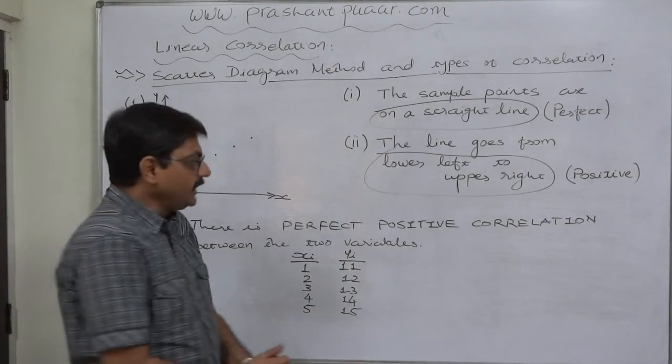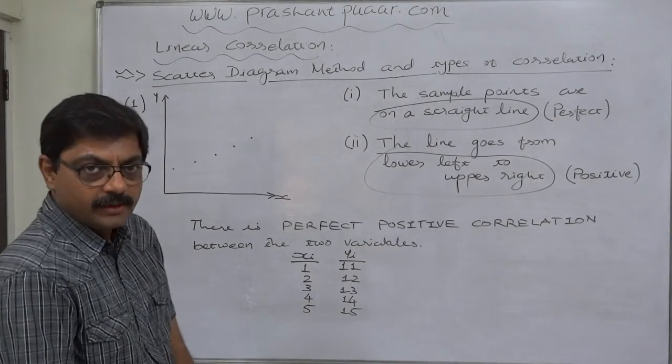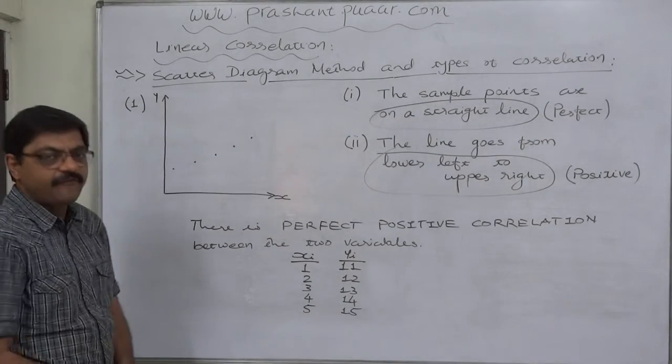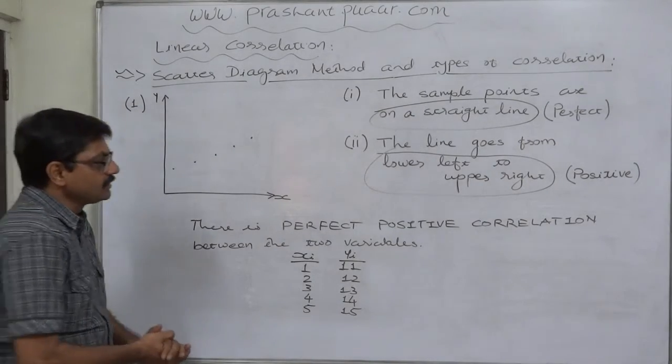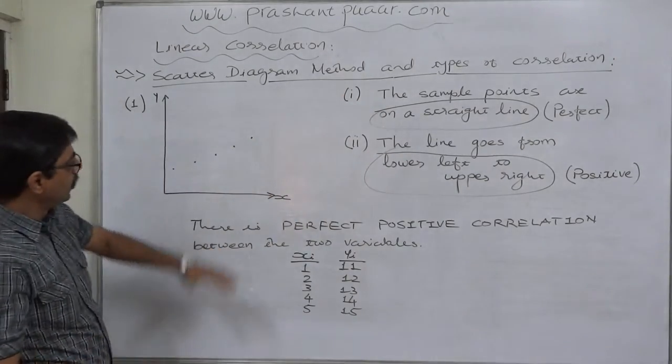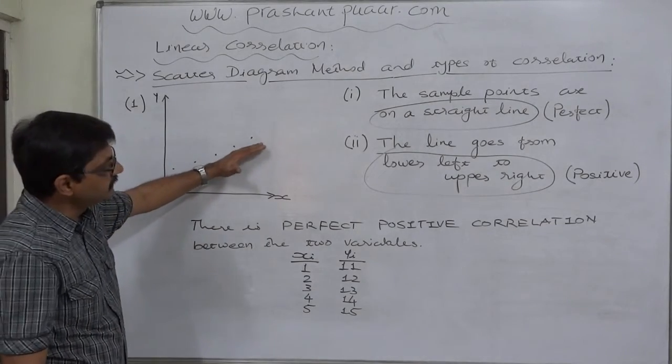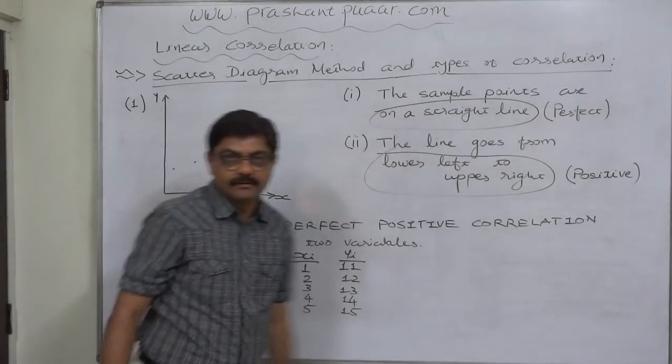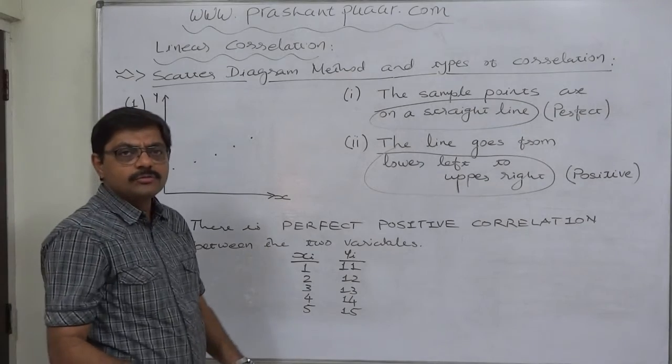After putting the simple points on a graph paper, if our observation gives these two remarks, the first is all the simple points are on a straight line. We do not require to draw the line but we can imagine a straight line easily.